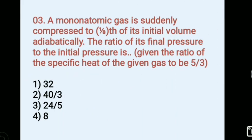A monoatomic gas is suddenly compressed to one-eighth of its initial volume adiabatically. The ratio of its final pressure to the initial pressure is, given the ratio of the specific heat of the given gas to be 5 by 3. Options: 1) 32, 2) 40 by 3, 3) 24 by 5, 4) 8. Answer 1, 32.